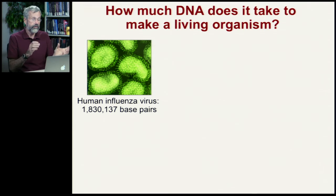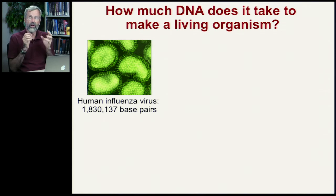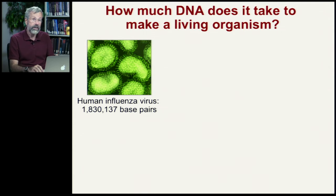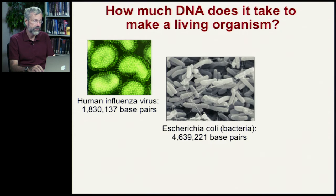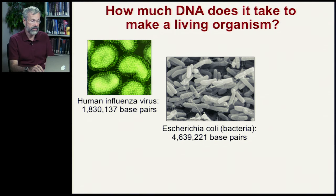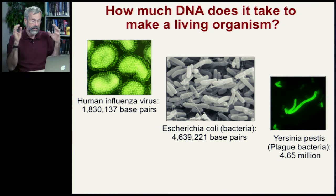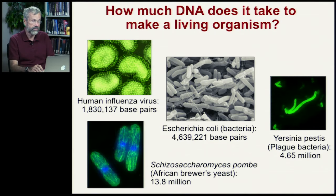Here's a virus — these are very simple, almost hardly even living things. The human influenza virus consists of about 1.8 million base pairs. Bacteria have 4.5 million base pairs. Another nasty bacteria — plague — also about 4.5 million base pairs.